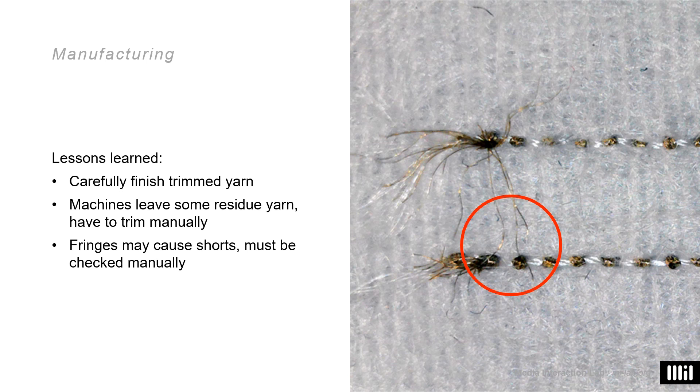Lastly, whenever the machine trims the conductive yarn, you unfortunately have to double-check. There's always some residue yarn that you have to trim manually, meaning with scissors. Tiny frays, hardly recognizable with the bare eye, will cause shorts and render your sensor defective.